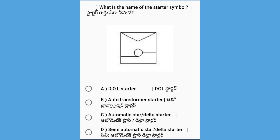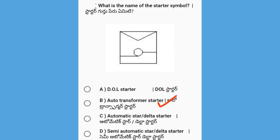You can see this is a DOL Starter Single Line Diagram. This is a Semi-Automatic Star Delta Starter. The answer is Auto Transformer Starter.